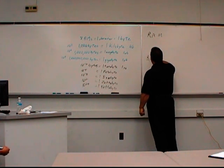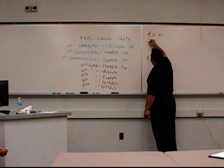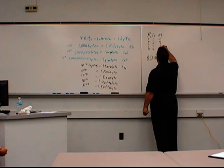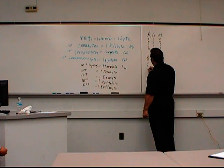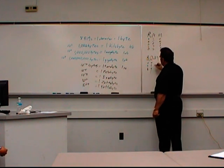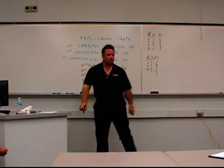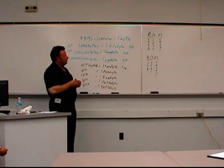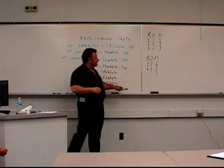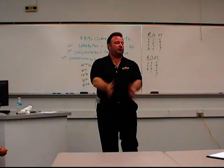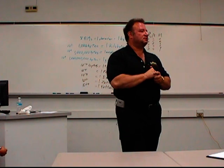RAM is random access memory and ROM is read-only memory. You can kind of get an idea of what they do differently just by the terms. Random access memory is memory that is accessed randomly.